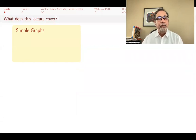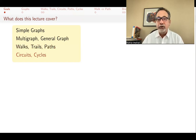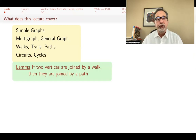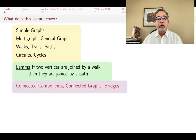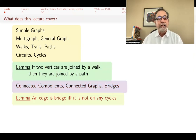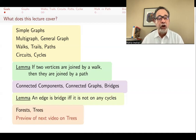What will this lecture cover? I will remind you what simple graphs are, or what a multigraph and a general graph are — I have a video just on those with a bit more explanation, but I will remind you of whatever we need here as well. We will introduce walks, trails, paths, circuits, and cycles. We will prove a lemma that if two vertices in a graph are joined by a walk, they are also joined by a path. We will talk about connected components, connected graphs, and bridges, and prove that an edge is a bridge if and only if it's not on any cycle. We will end by discussing forests and trees and giving a preview of the next video, which will be solely on trees.